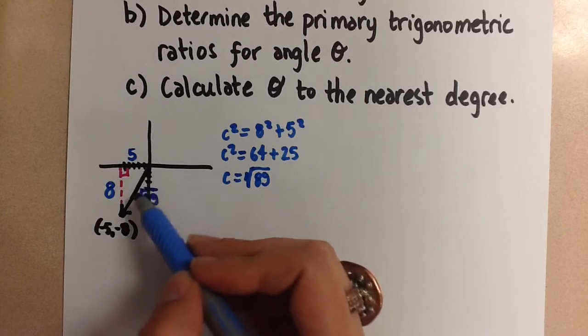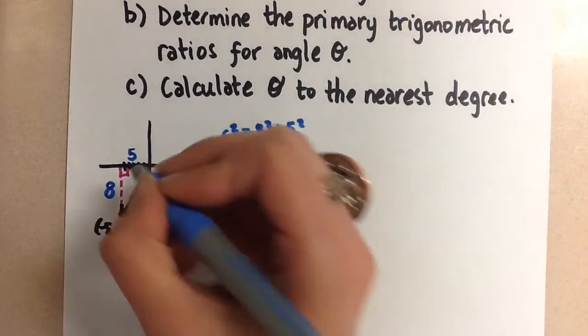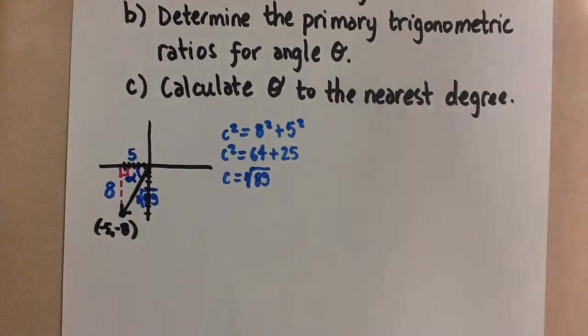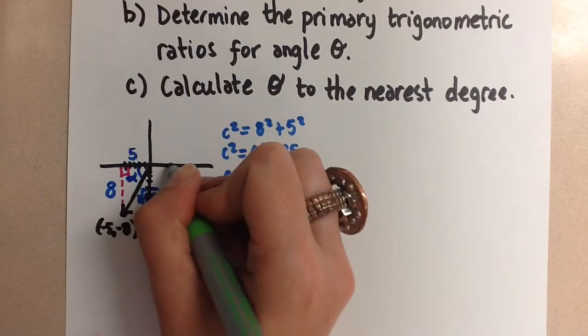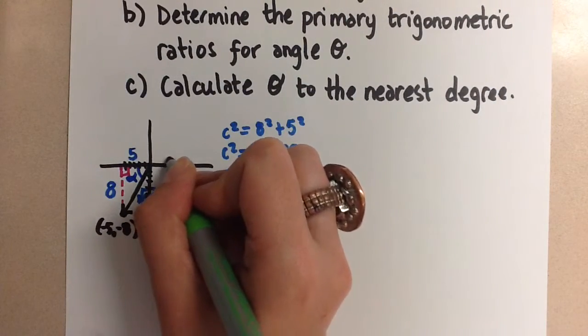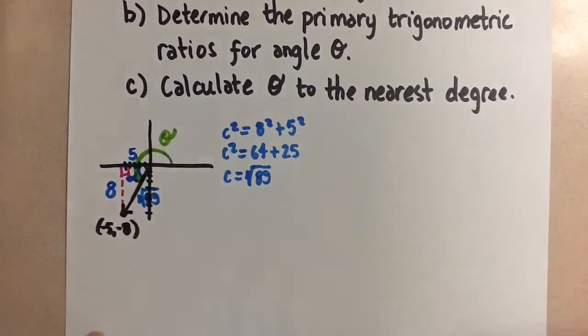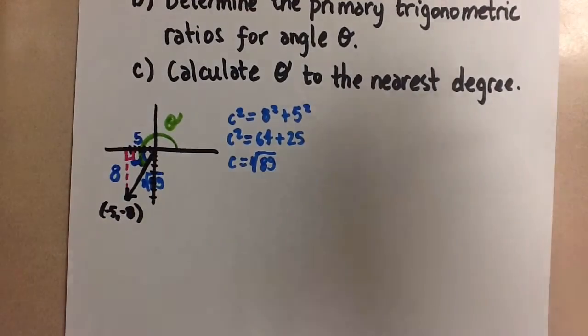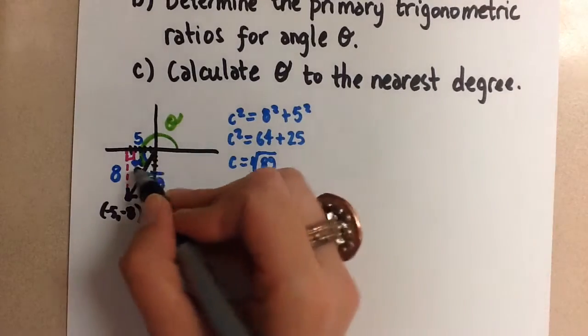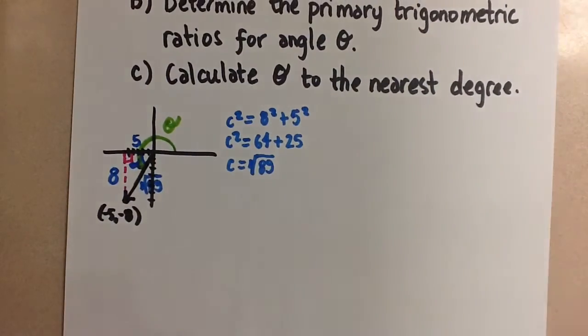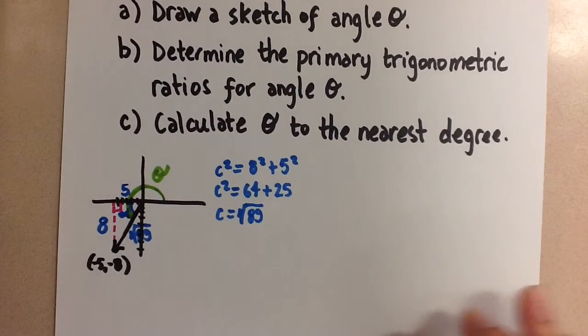Now we have this right-angle triangle with all three sides labeled. This angle in here we can call alpha because theta, remember, is always the angle that is made counterclockwise from the positive x-axis. So here we have angle theta that we will solve for at the end. For now, angle theta and angle alpha in this right-angle triangle have the same trigonometric ratios. So we're going to go ahead and do those next.